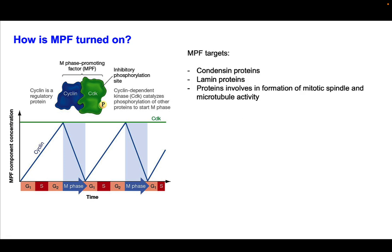Once active, MPF has a number of targets. One target is the condensin proteins — it phosphorylates and activates them, causing chromatin to condense. It also targets lamin proteins, those intermediate filaments, causing them to disassemble from one another. When MPF phosphorylates the lamins, the dimers no longer stack up, the lamina falls apart in the nucleus, and this helps with nuclear disassembly. MPF also targets proteins involved in the formation of the mitotic spindle, as well as proteins involved in microtubule polymerization and depolymerization — mediating all the steps of mitosis.